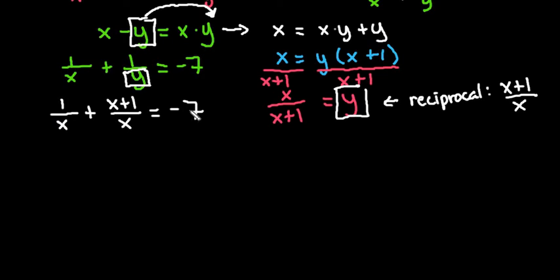Now we have an equation with just x to solve for. What I advise doing with fractions is to multiply by the lowest common denominator. The LCD here would be x. If I multiply x in, I'm left with 1 here. On this one, the x's cancel, so I'd be left with x plus 1. On this side, I have negative 7x. Now we have a very simple equation to solve.